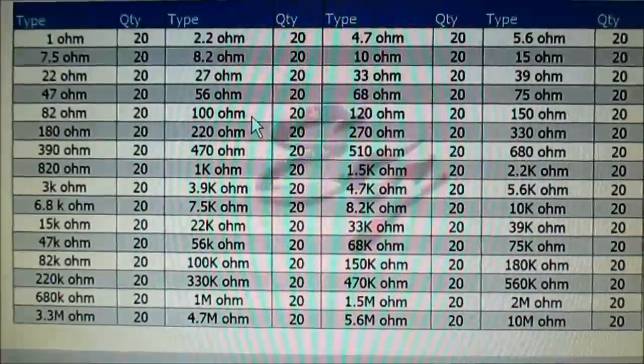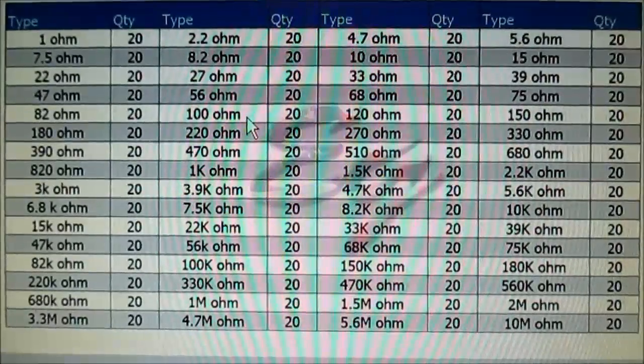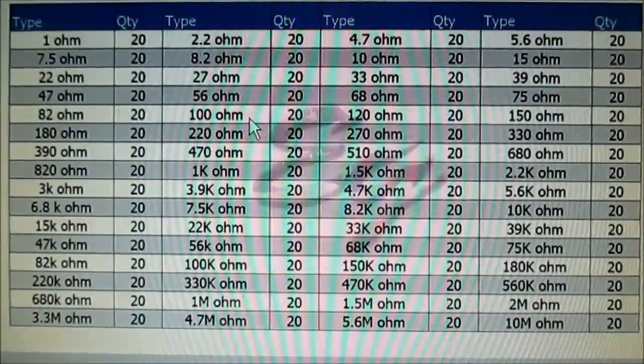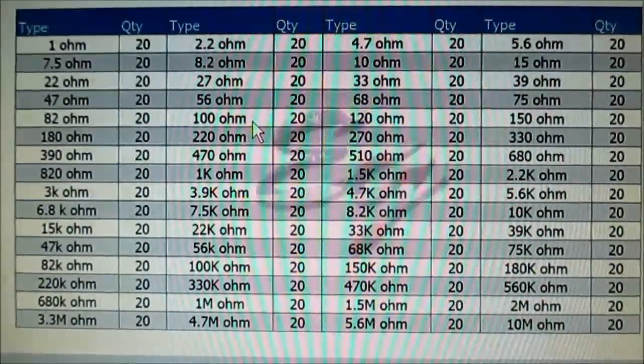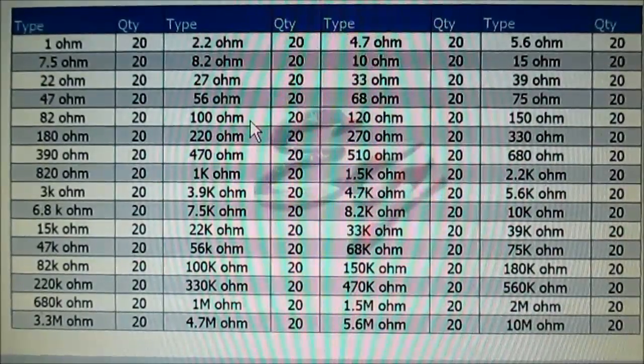Here is a table of the resistor values that I got. You get 20 of each value starting at 1 ohm, 2.2 ohm, 4.7 so on and so forth all the way up to 10 mega ohms.